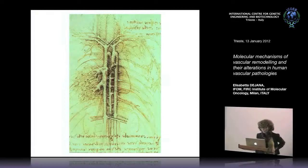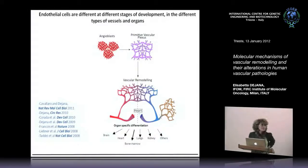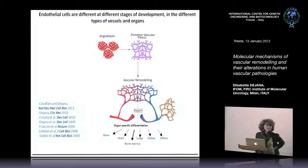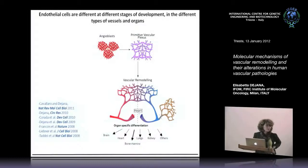We now know that things are much more complex than this. I try to summarize in this slide, in a very schematic way, the different steps of endothelial cell differentiation and vascular development, and I put some of the papers we have done related to this part of the work. There are many other groups that contributed much more than we did, but just to give you some ideas.